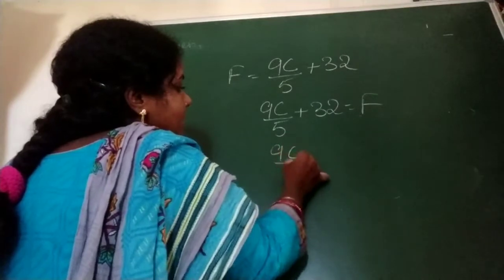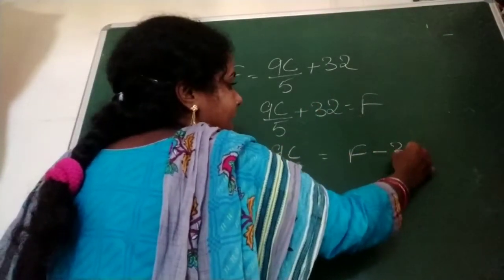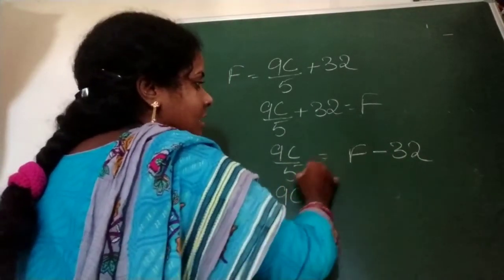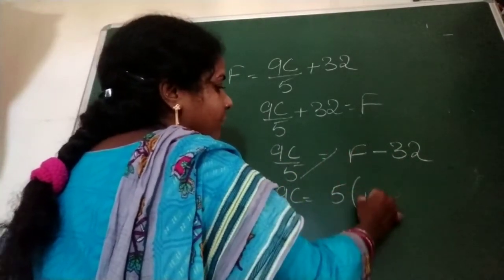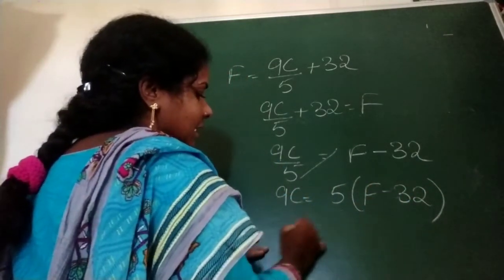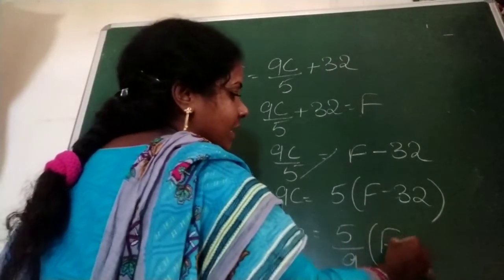9C by 5 plus 32 degree equal to Fahrenheit. Now 9C by 5 equal to F, plus 32 is going that side means minus 32. 9C equal to 5 is here, cross multiplication, 5 into F minus 32.